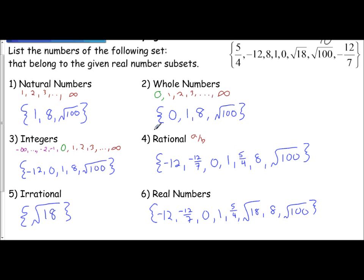So we just did some problems on how to determine the subsets that numbers belong from a given list, and hopefully this helped you with your understanding of what is a natural number, what is a whole number, what's an integer, rational versus irrational numbers, and how to see which ones they belong to.